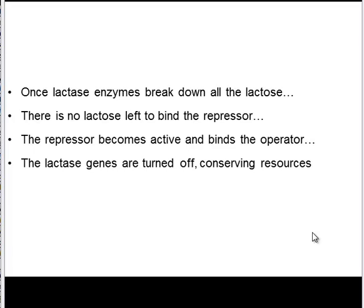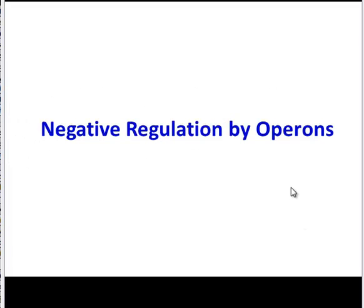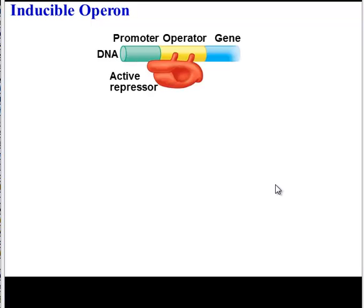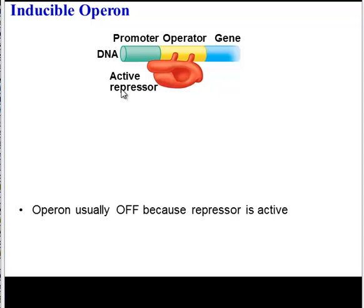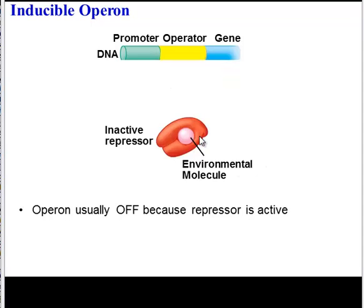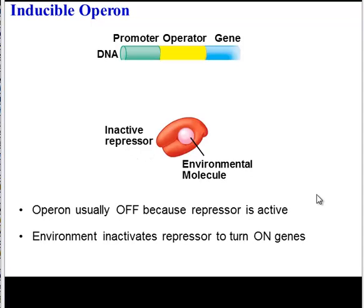So here's a summary of that. Now let's zoom out a little bit. There are many different operons in a bacterial cell — the lac operon is only one of them. We can categorize operons based on how they turn genes on and off. Some operons negatively regulate. One type is an inducible operon, like the lac operon — it's usually off, the repressor is usually active and bound to the operator. However, if there's a change in the environment, the repressor can become inactive and the operon can be turned on. So an inducible operon can be induced on.